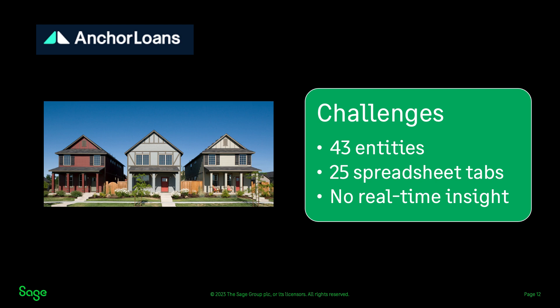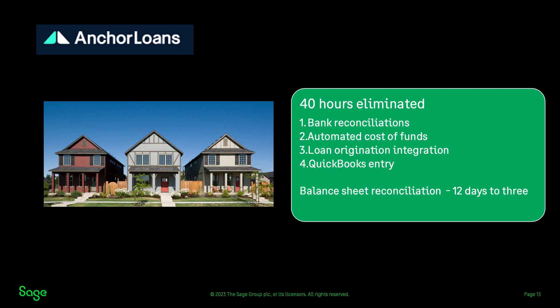In order to deliver timely, accurate, and meaningful financial statements, they needed to upgrade the accounting system. Upgrading to Sage Intact, Anchor eliminated around 16 hours a month of manual bank reconciliations that had been done in Excel. Plus, it made it easy for accountants to spot reconciliation discrepancies and drill down into details for resolution. Thompson's team saved another 16 hours a month by automatically calculating the cost of funds across seven financing vehicles. Integration with loan origination software eliminated another eight hours a month of manually entered data into QuickBooks, all while improving accuracy. Meanwhile, Anchor optimized the balance sheet reconciliation process from 12 business days a month to just three — a 75% improvement. Isn't this the place you want to be, where finance gives the executive team what they want, when they need it?